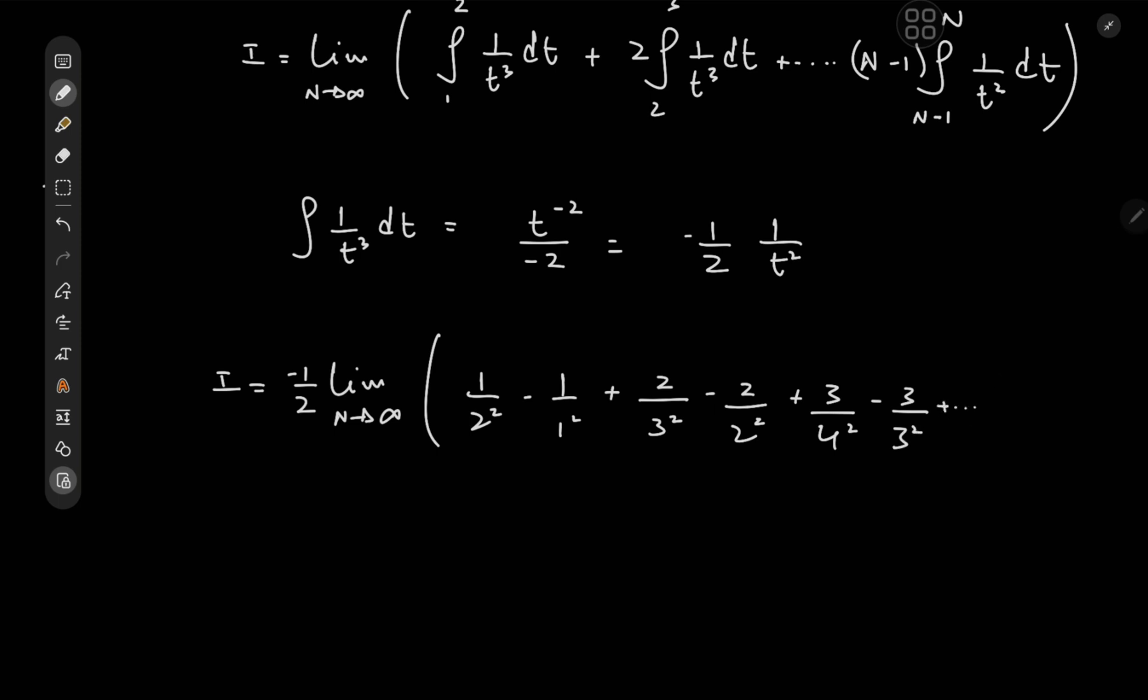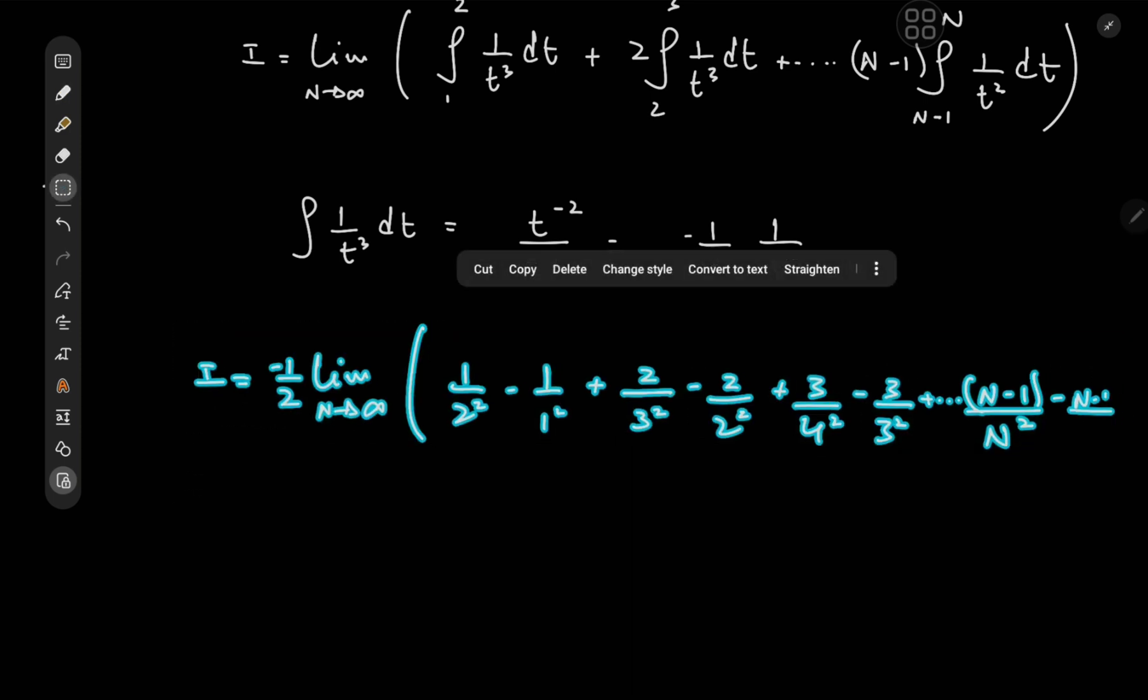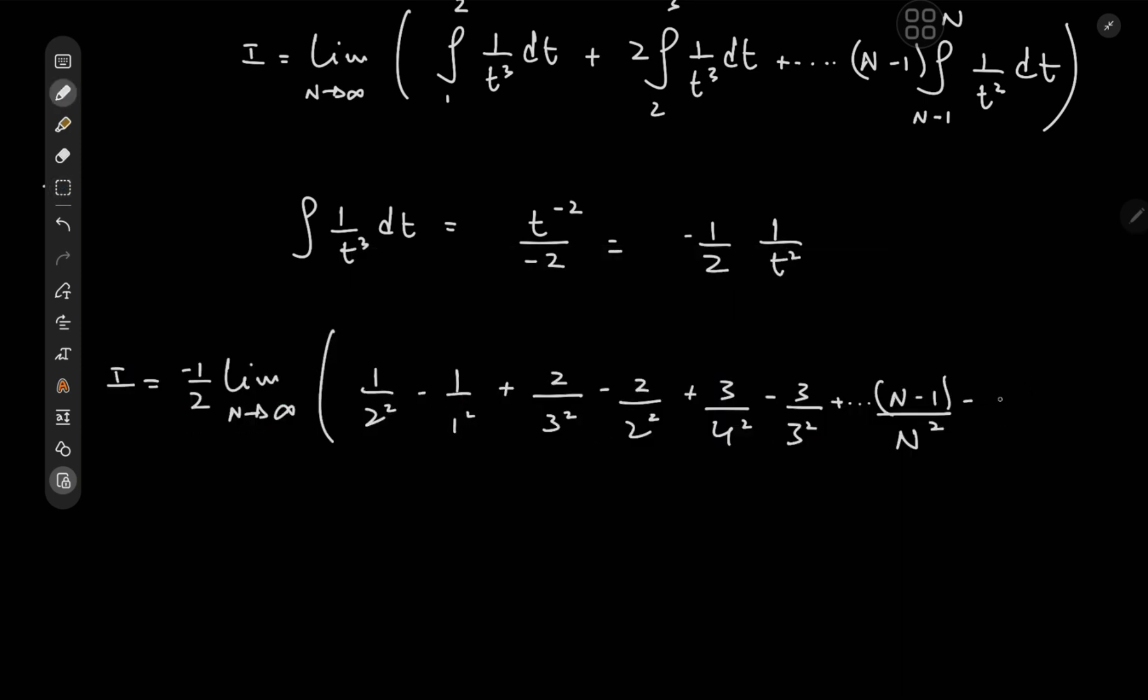And then finally we would have something like n minus 1 over n squared minus n minus 1 over wait, I'm just going to need a little bit more writing space for that last term. And of course, we would have n minus 1 over n minus 1 squared.